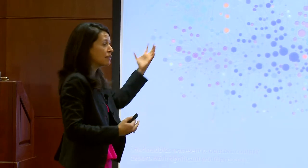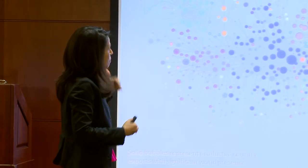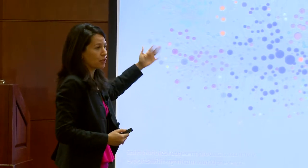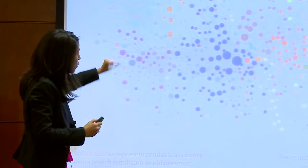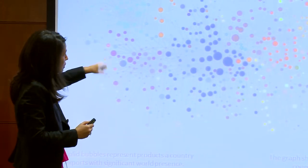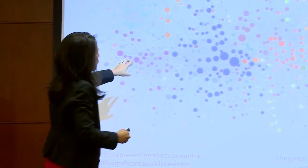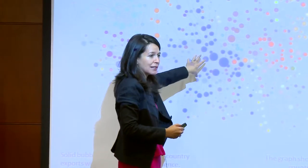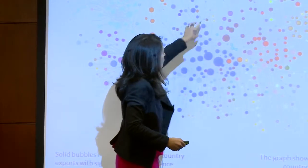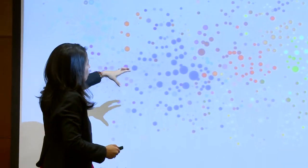Countries grow when they diversify — when their monkeys jump through this forest and take over. The implications of the shape of this forest matter for development. If the shape were homogeneous with every node separated by the same amount, development would just be a matter of time. But this shape means that if your monkeys are in dense areas, they'll jump around easily, because monkeys jump only short distances.